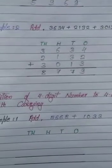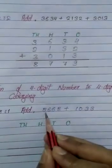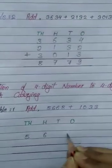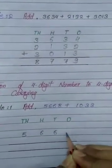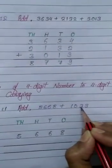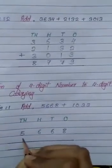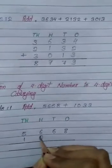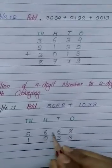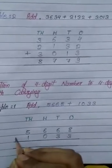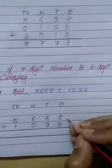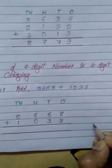First, we have to put them in their place values. 5,668 is 5 thousands, 6 hundreds, 6 tens and 8 ones. 1,033 is 1 thousand, 0 hundreds, 3 tens and 3 ones. We put the addition symbol here and start adding from the 1s place: 8 plus 3 is 11.